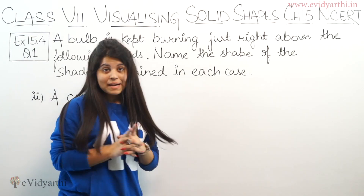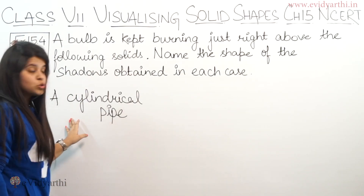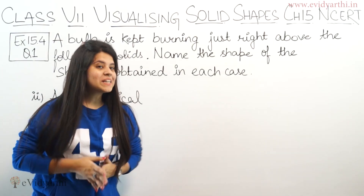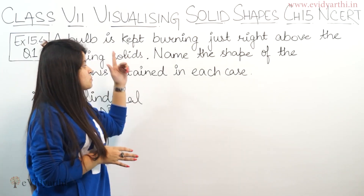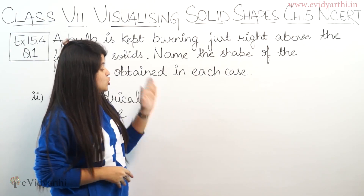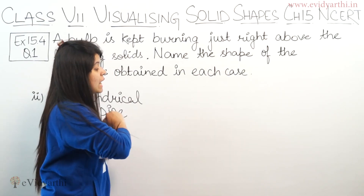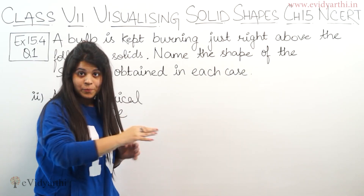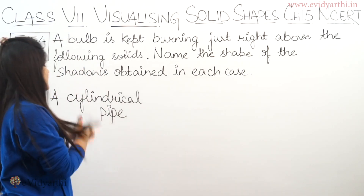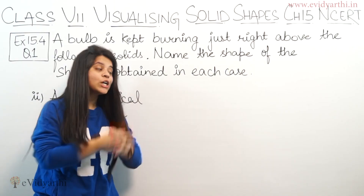The second part says a cylindrical pipe. Here we can see this is a cylindrical pipe. Now let's put a bulb over this. The shadow formed is in the shape of a line. So the shadow formed by a cylindrical pipe is a line.